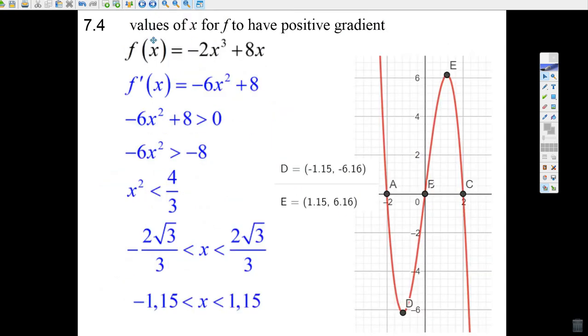The next question is a little bit harder, but not so hard, really, because it says find all the values for x for this function to have a positive gradient. So, all you do, well, to look at gradients, you need to look at the derivative. So, do the derivative. 3 times minus 2 is minus 6x squared. 1 times 8 here is just 8. There's the derivative.